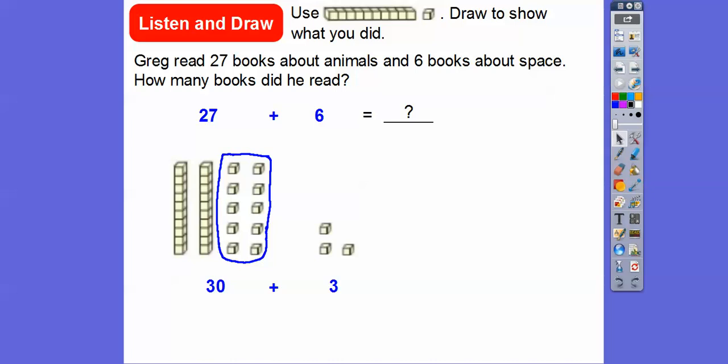And then 30 plus 3. That's easier to add than 27 plus 6. So we got it to a nice, they call it a compatible number, 30. So 27 plus 6 is the same as 30 plus 3, which is 33. And so Greg read 33 books all together right there.